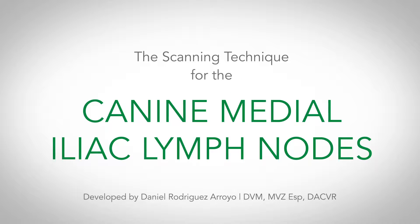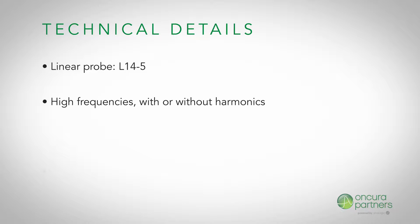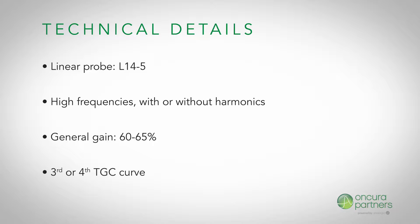The scanning technique for the medial iliac lymph nodes in lateral recumbent canine patients. For this ultrasound, a linear transducer will be used at high frequencies with or without harmonics. The general gain should be maintained at approximately 60 to 65 percent, and the third or fourth TGC curve should be selected from the drop-down menu.